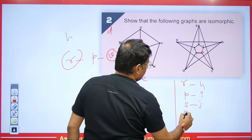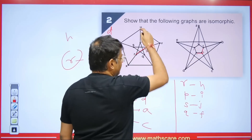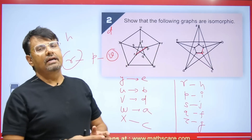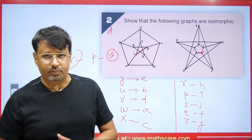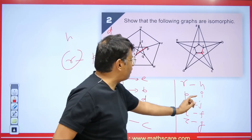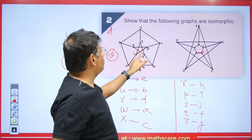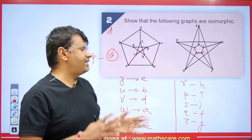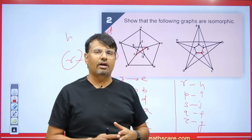Verifying the edge correspondences: Q and Z connect here, so F and G should connect — and they do. S and Q connect, so J and F should connect — they do. All vertices and edges are in one-to-one correspondence with each other. This means these two graphs are isomorphic.